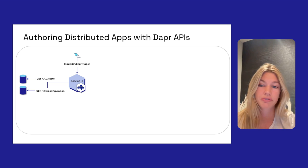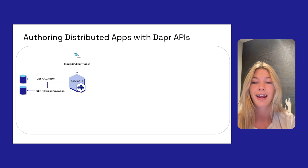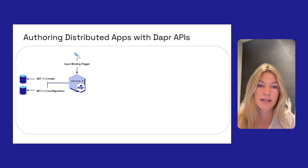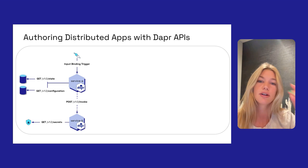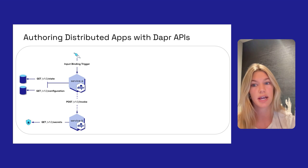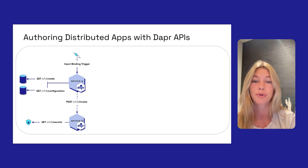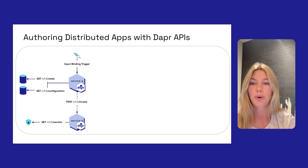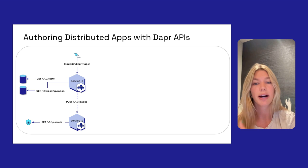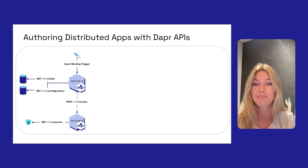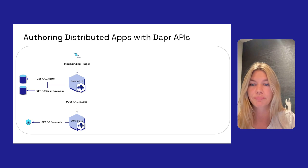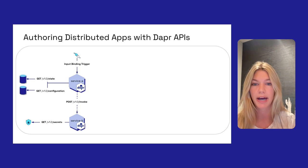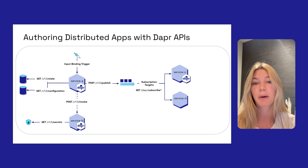Service A might also communicate with other microservices using the Dapr service invocation building block — service A can communicate directly to service B using the invoke endpoint. Service B might have secure secrets it retrieves using Dapr from a secret store, whether running locally or in the public cloud. If service A wants a different communication pattern — event-driven or persistent — it can use the publish API through the pub/sub building block to publish a message to a message broker.